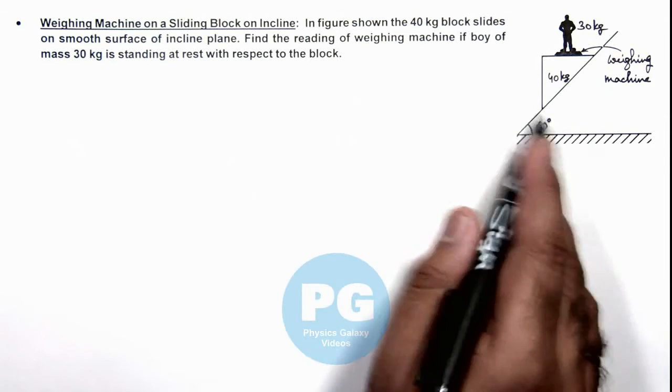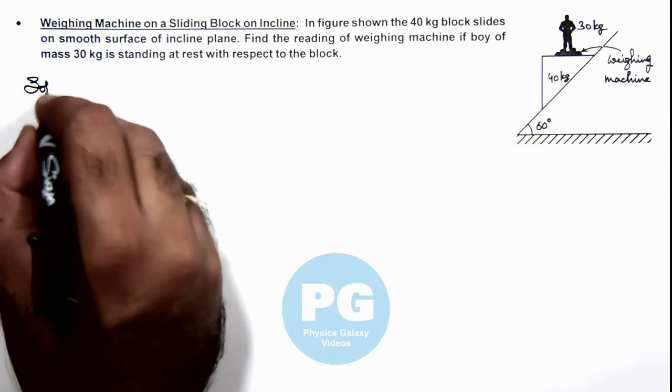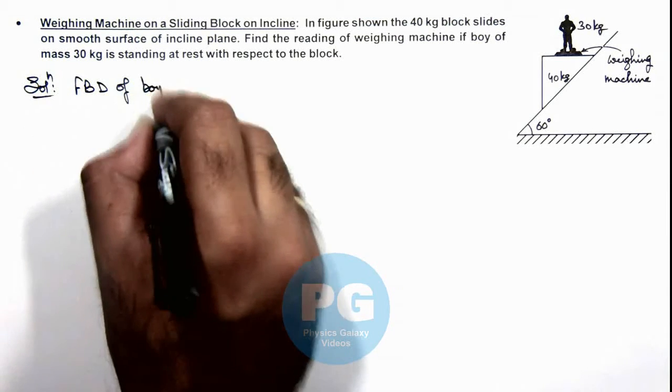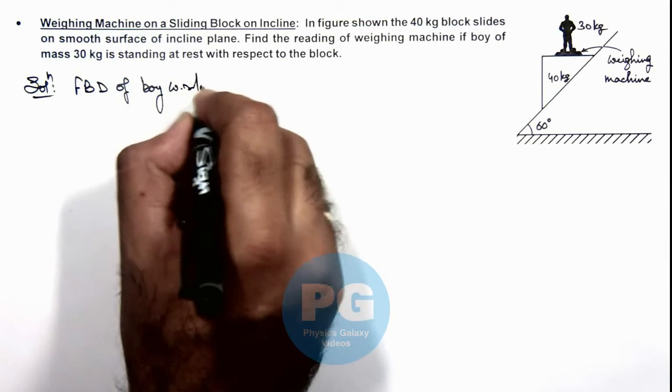Here, to analyze this situation we first need to draw the free body diagram of the boy with respect to the block.